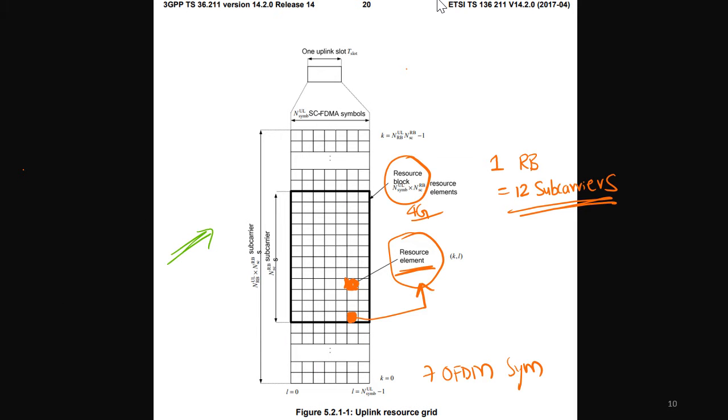So this is how exactly the OFDM grid is shown in case of 3GPP spec. This is the picture taken from the 3GPP spec 38.211 version 14.2. That is the reference for this picture and this is the resource grid.